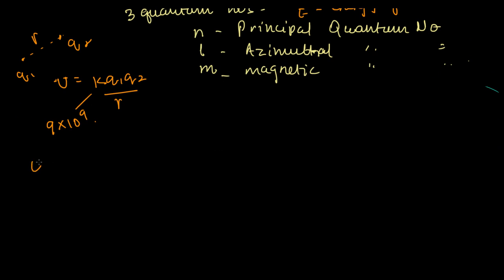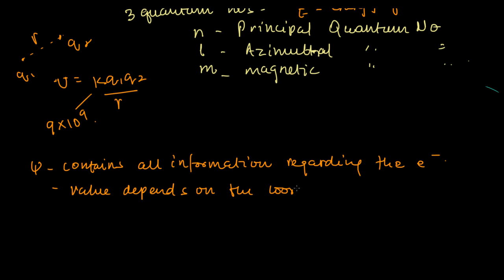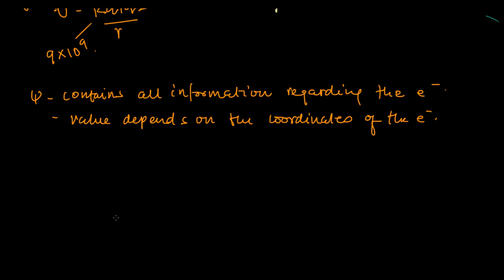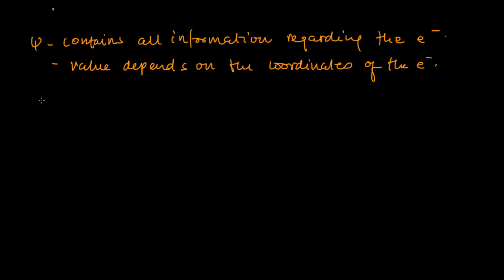Now, the wave function contains all the information regarding that electron. And we have seen that its value depends on the coordinate of the electron. It is a function, so otherwise it has no meaning, but when you put the coordinates, it gives you the information about all the electrons around.